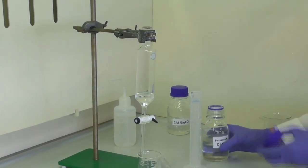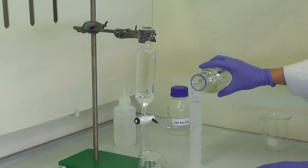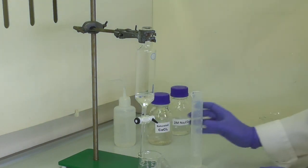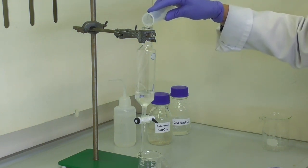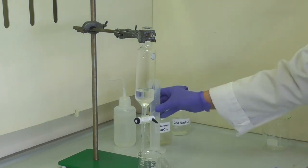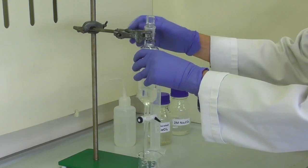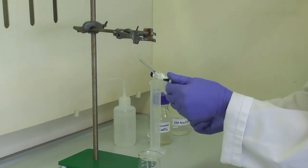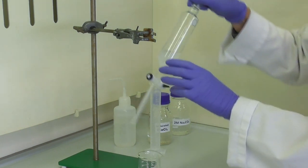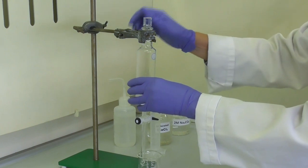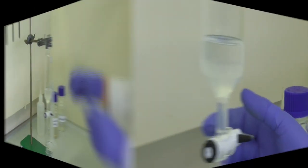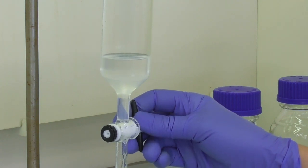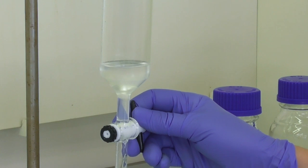After draining the aqueous layer, we add the third reagent, which is calcium chloride solution. This is a drying agent, so it will draw some water out of our organic layer. We add this into the funnel and repeat the shaking process, then drain the aqueous layer.